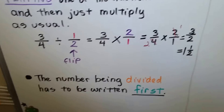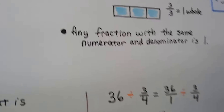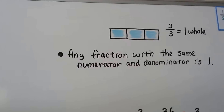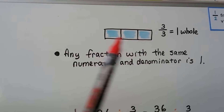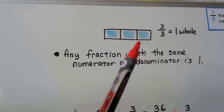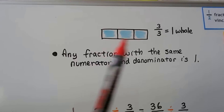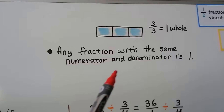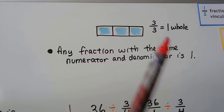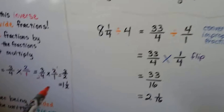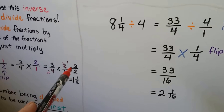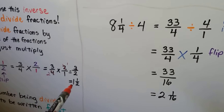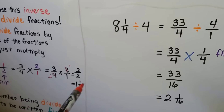Make sure the dividend — the number being divided — is first, and the divisor — the one going into it — is second. Also remember that if you have something split into equal groups and you have all of those equal parts, you have one whole. So any fraction with the same numerator and denominator equals one whole. That's how we got 3/2 to become 1 and a half — we pulled the two halves out and they became one whole, leaving 1 and a half.